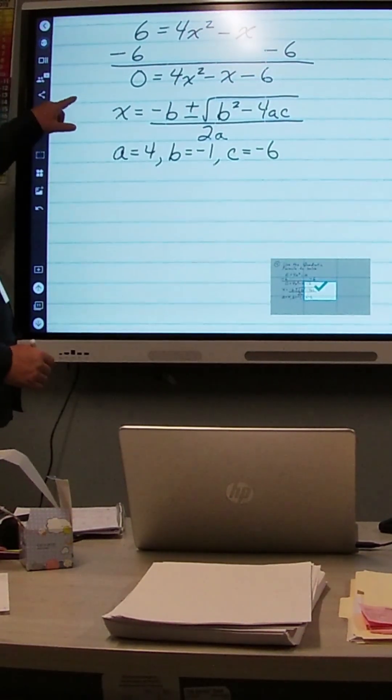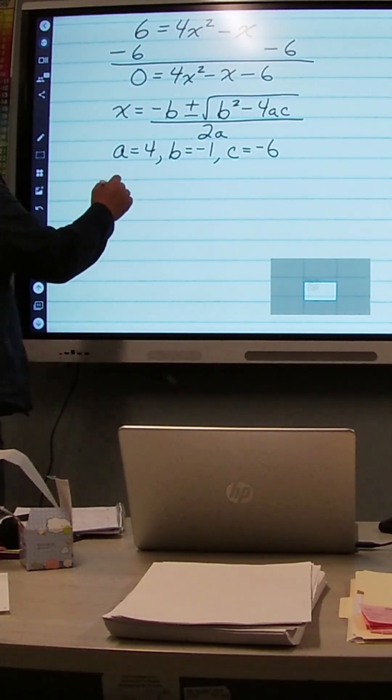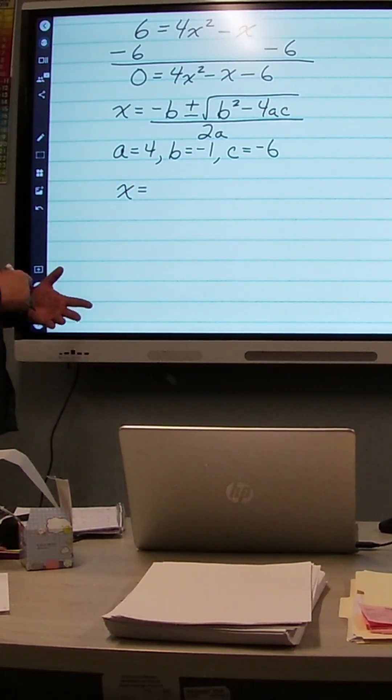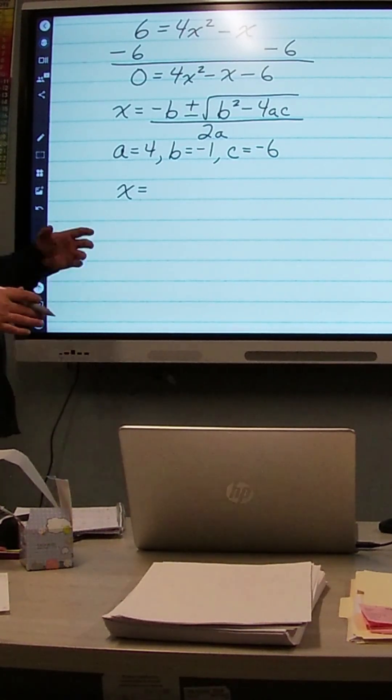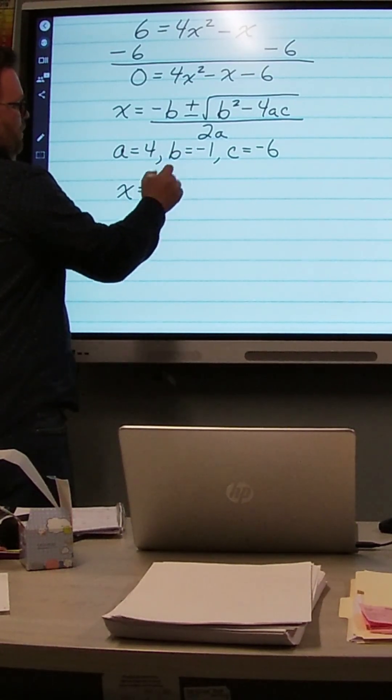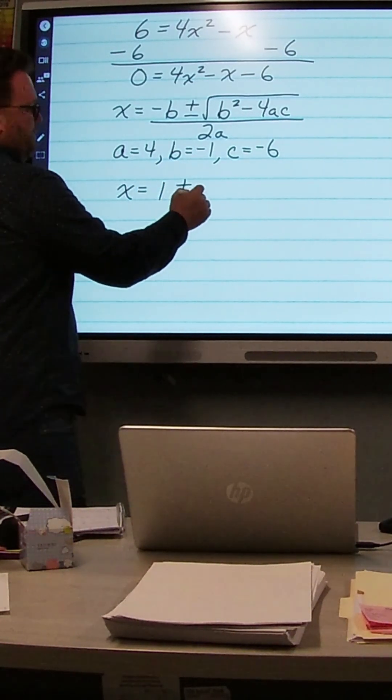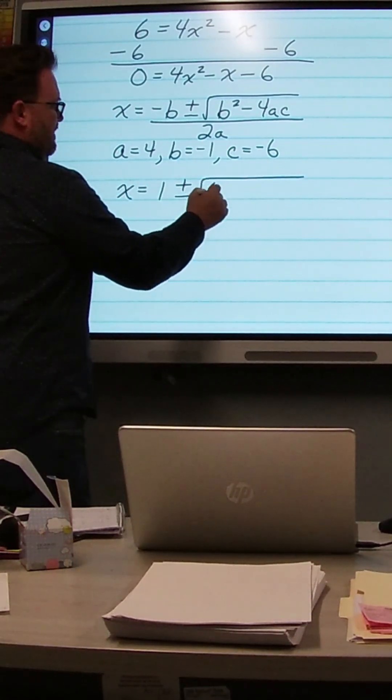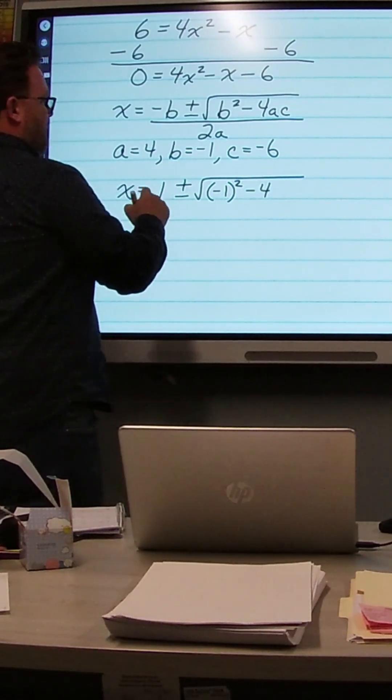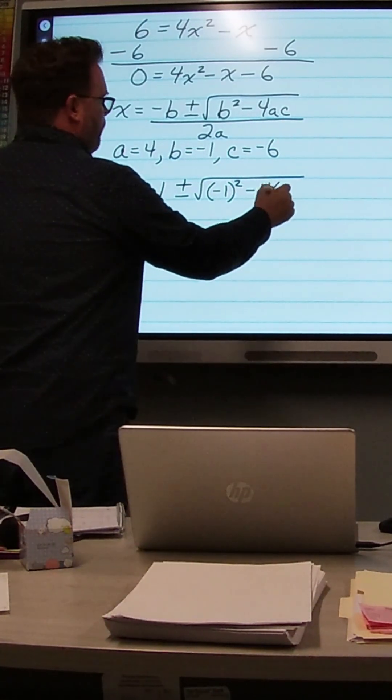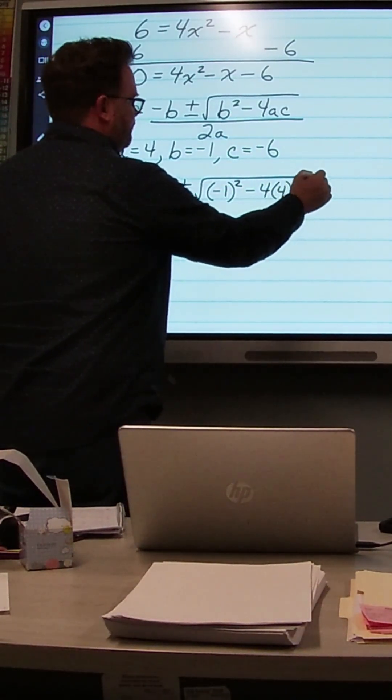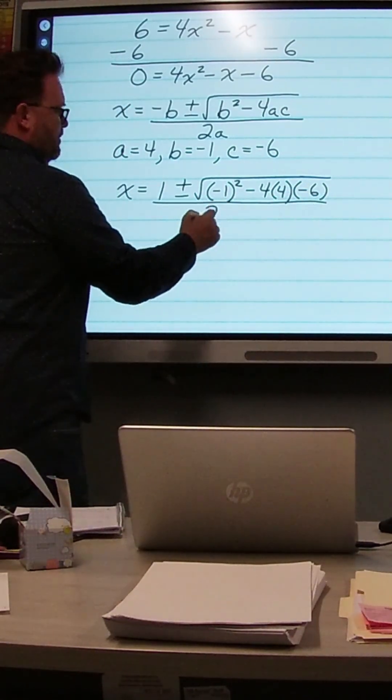Okay, so let's substitute these into our equation. We have x equals negative b. So that's like a negative 1 times b. Easy way to think of it is just whatever the sign of b is, change that sign. So in this case, we're going to change negative 1 to just 1 plus or minus square root of b squared, so negative 1 squared. Okay, so we're going to subtract 4 times a, which is 4, times c, which is negative 6. And that's going to be all over 2a, so 2 times 4.